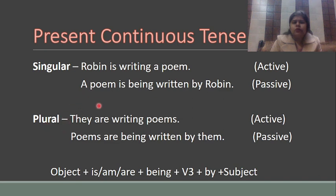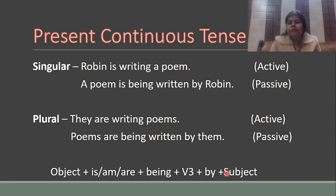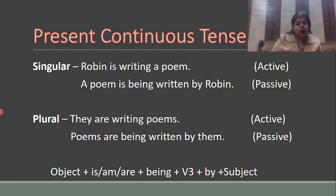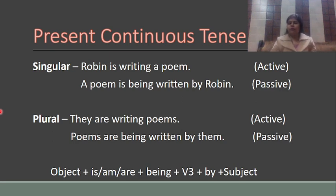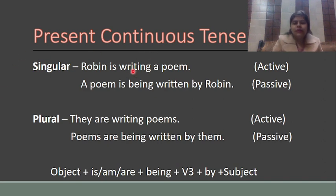For plural in present continuous: 'They are writing poems' becomes 'Poems are being written by them.' Structure: Object + is/am/are + being + verb third form + by + subject. The key addition in present continuous tense is 'being' — since is/am/are is already there, we only add 'being' plus the third form. 'Being' is essentially 'be' with 'ing' added. Third form is always prominent in passive voice.